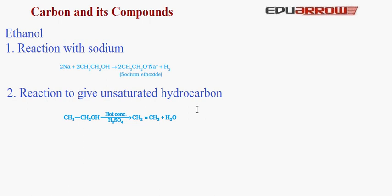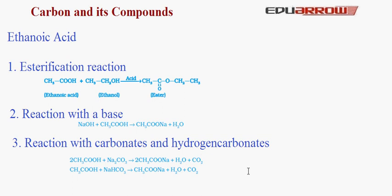Let us now learn about ethanoic acid, which is CH₃COOH. Reaction 1 — Esterification: ethanoic acid reacts with ethanol in the presence of an acid to form an ester. CH₃COOH + CH₃CH₂OH in the presence of acid gives CH₃-CO-O-CH₂-CH₃. The esters formed have a sweet smell. Reaction 2 — With base: ethanoic acid reacts with a base to form sodium ethanoate and water. This reaction is similar to the neutralization reaction between an acid and a base. So ethanoic acid is acidic in nature.